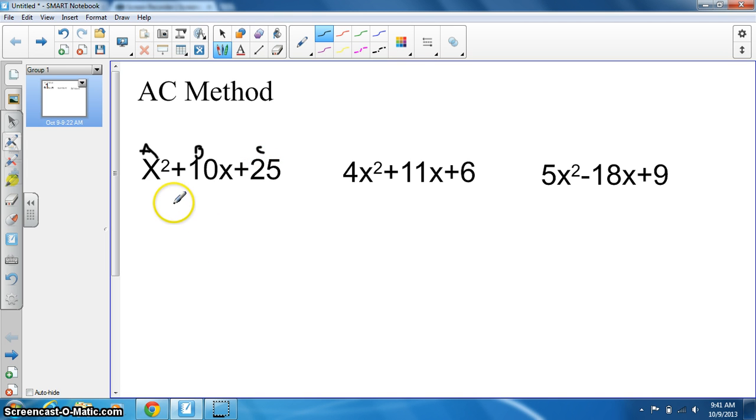After we've got that, we create a cross or an X. On the top half, we take A times C. A times C in this case would just be 25. We leave the x behind for now. On the lower half, we take 10x or B, and we leave the x behind also.